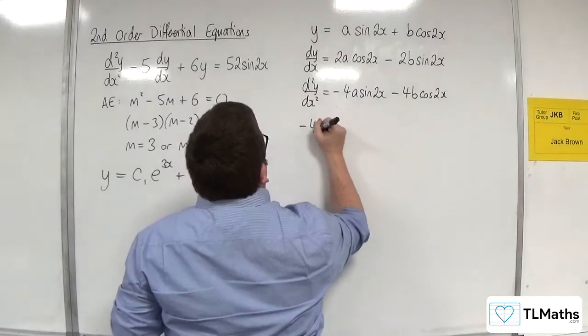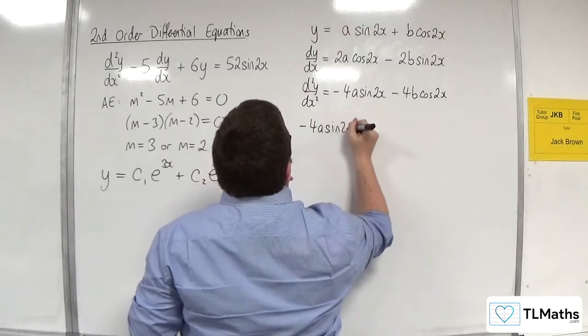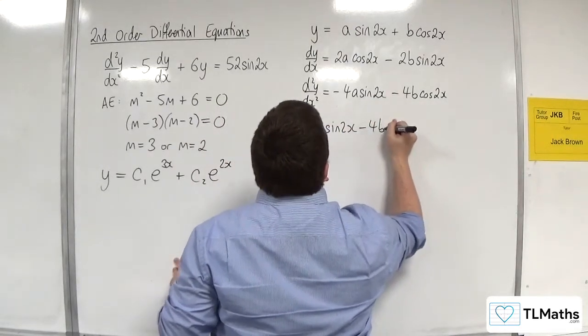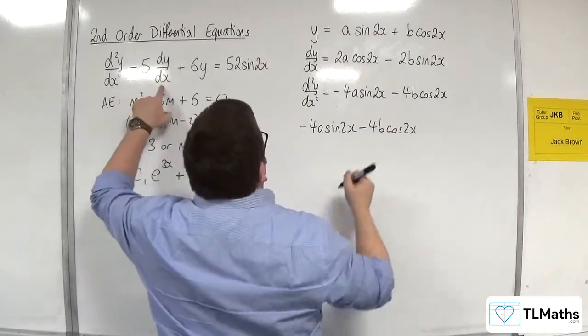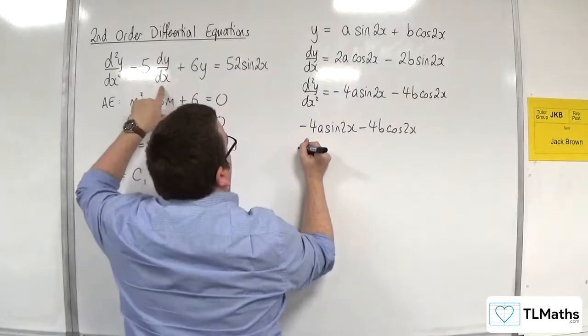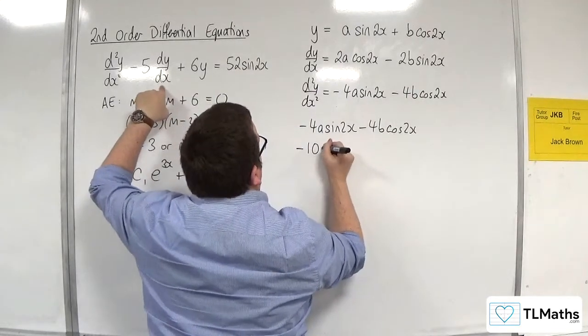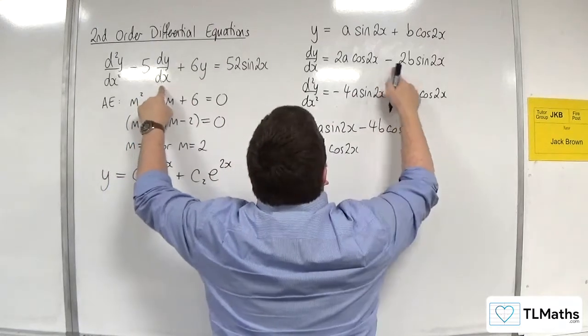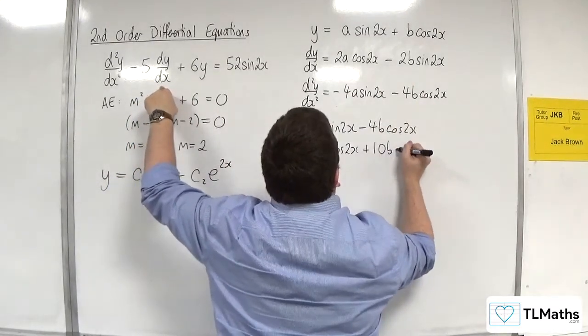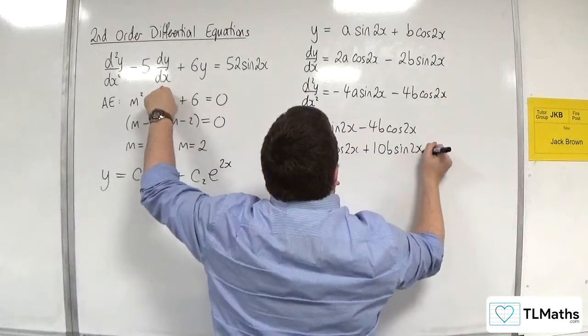So, we have minus 4a sine of 2x, take away 4b cosine of 2x. Take away 5 lots of dy by dx. So, take away 10a cosine of 2x. I'm multiplying through as I go. Take away 5 lots of that. So, plus 10b sine of 2x.